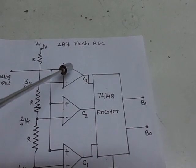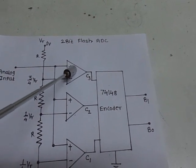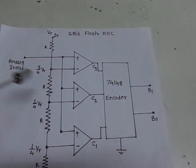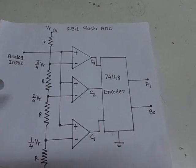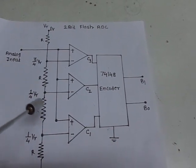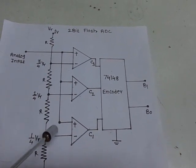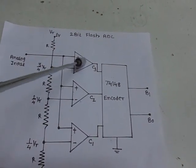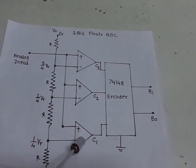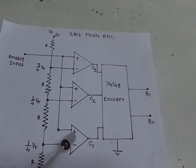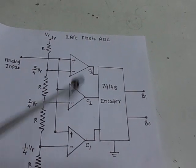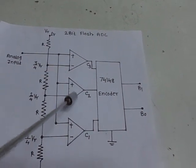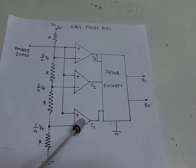Here we have operational amplifier 1, 2, and 3. We are going to use IC LM324, which is an op-amp IC. We are going to use these three op-amps from this integrated circuit, and they are working as comparators.